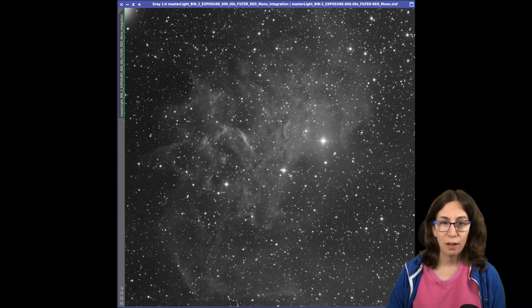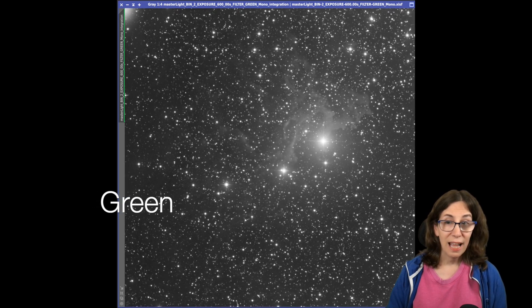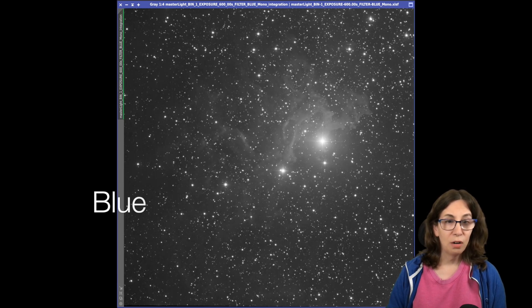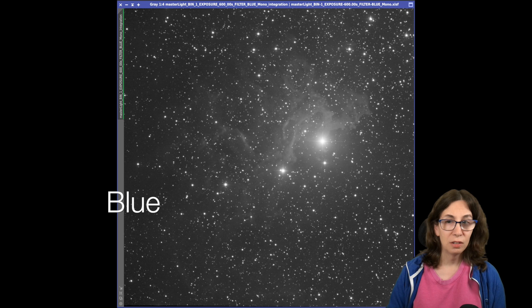Teammates could choose how they wanted to process it. SHO, LRGB, HARGB, or maybe something even more creative. Well, it turned out that the O3 filter didn't show any real signal, so using it was out for final processing.